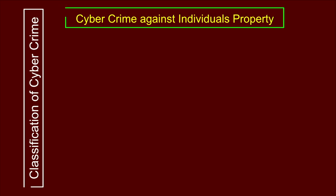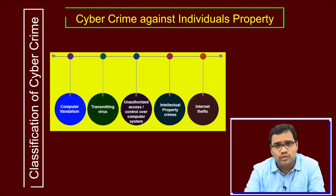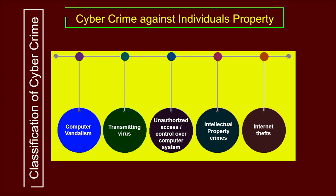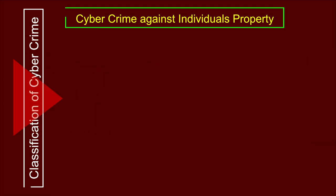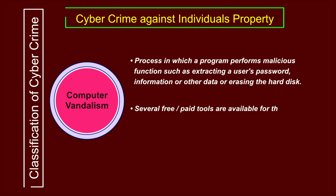Now we come to cybercrime against individual property. This deals with IT assets, IT infrastructure, files, or financial assets of the individual — different from cybercrime against the individual person. The five types of crime in this category start with computer vandalism: a process where a program performs malicious functions such as extracting a user's password, information, or other data, or erasing the hard disk. Performing this task without user consent is a cybercrime.